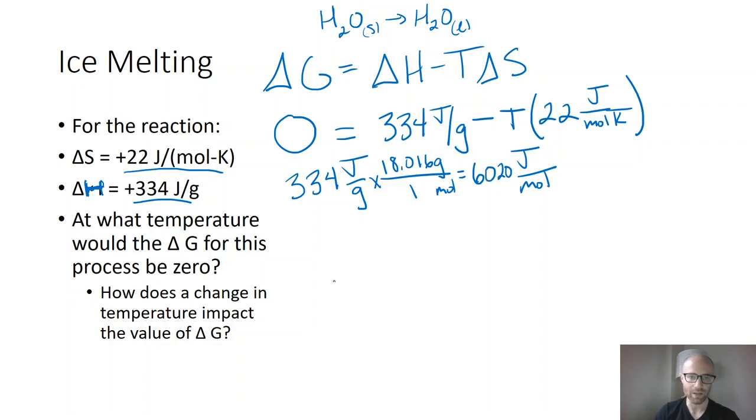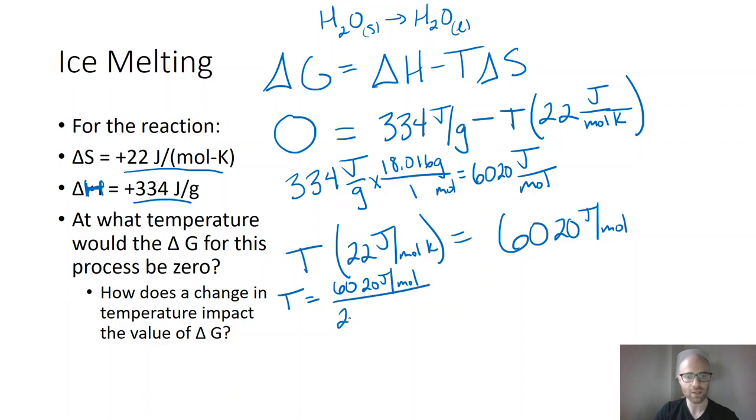So now we can step in and do some algebra. I'm going to move things over. So T times 22 joules per mole K equals 6020 joules per mole. Which means that the temperature is equal to 6020 joules per mole divided by 22 joules per mole K. If we cancel out our units and do our math, what we end up with is that T is equal to 273.6 K.